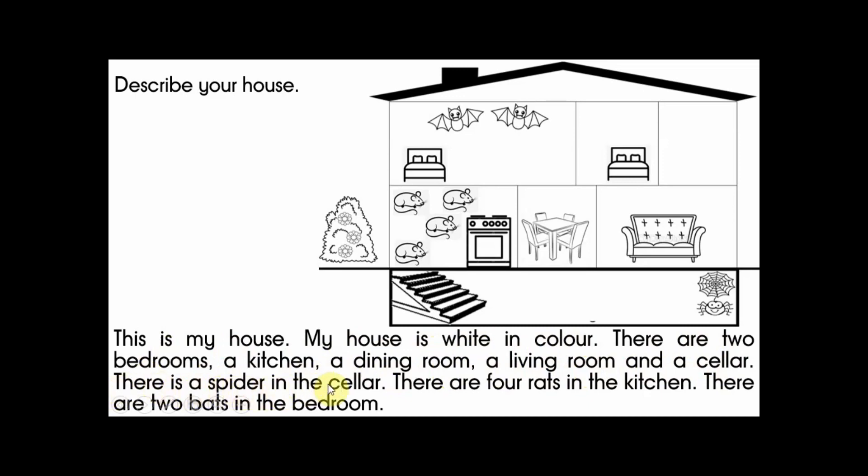In the cellar, there are four rats. In the kitchen, there are two bats in the bedroom. Because both are in the same room, I didn't add an 's'. If it had an 's', it would mean there are two here and two there.